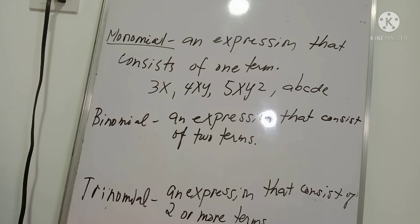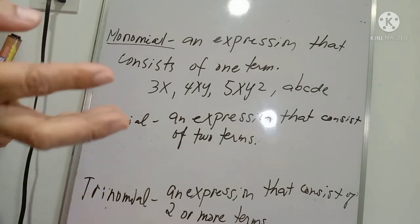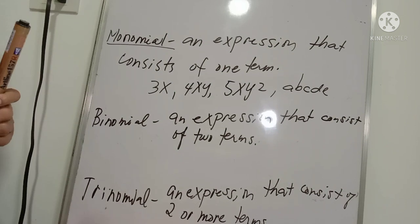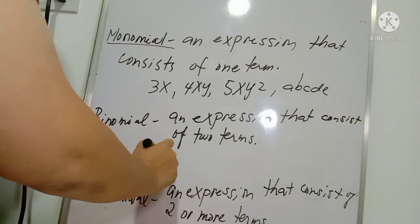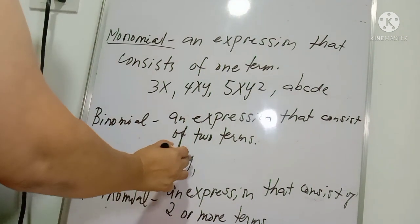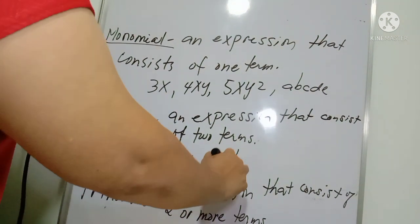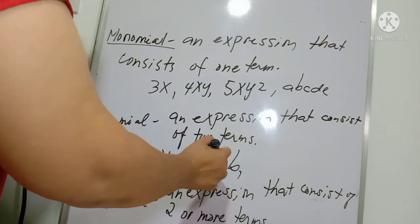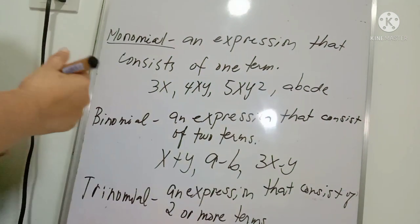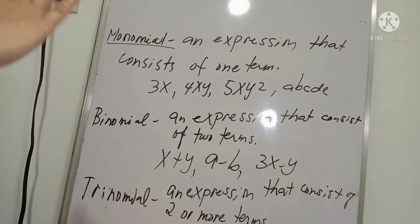A binomial is an expression that consists of two terms. You can identify it by the presence of a plus or minus sign separating exactly two terms. For example: x + y is a binomial, a − b is a binomial, and 3x − y is also a binomial — each separated by a plus or minus sign.